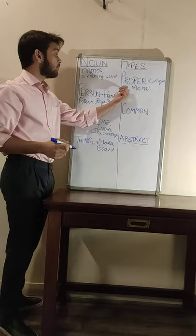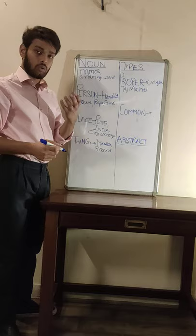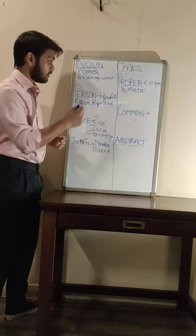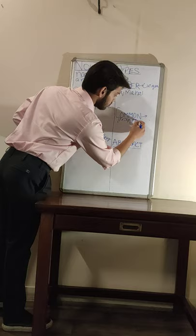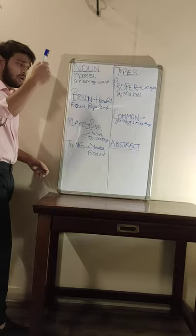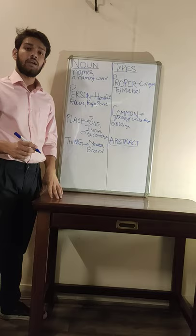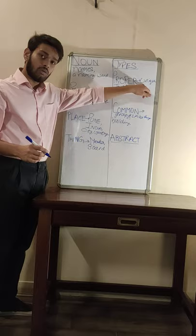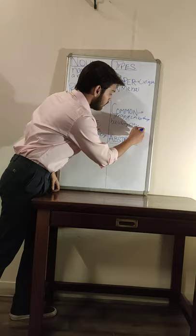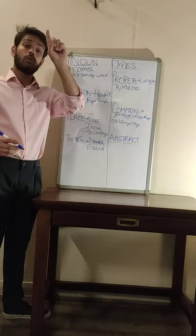Then, common nouns. A common noun is a word which is used to name a group of similar things. For example, building — Taj Mahal is also a building, our hospital is also a building. But when it has a different name, it becomes a proper noun. And when we say it's a building or it's a city, it becomes a common noun, because there are many cities. Pune is only one of the cities; Mumbai is also a city, Delhi is also a city.